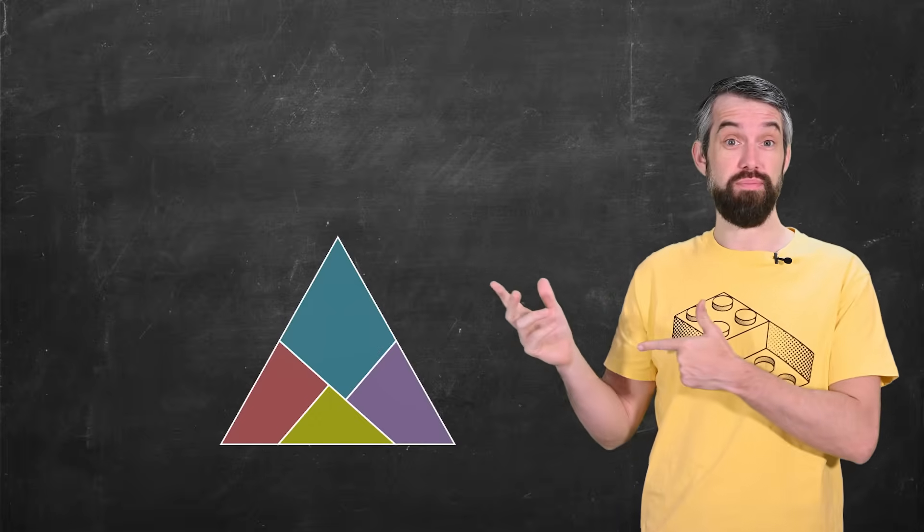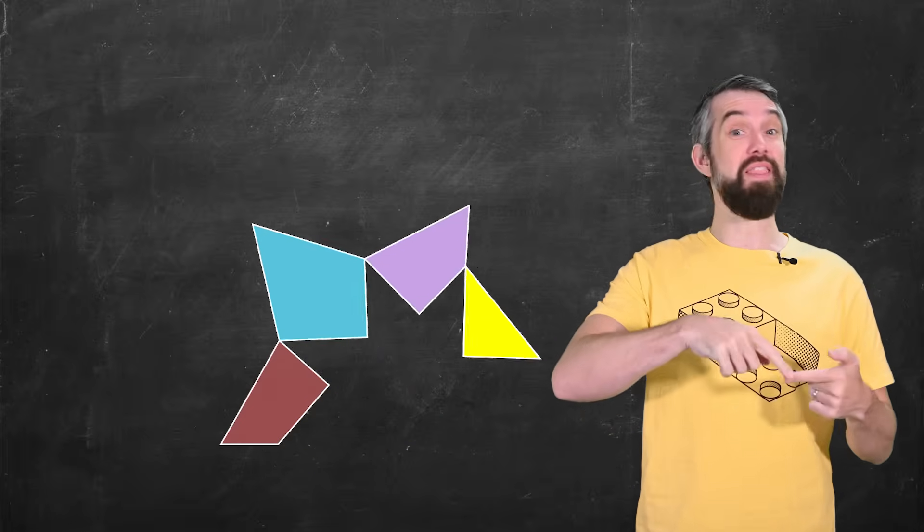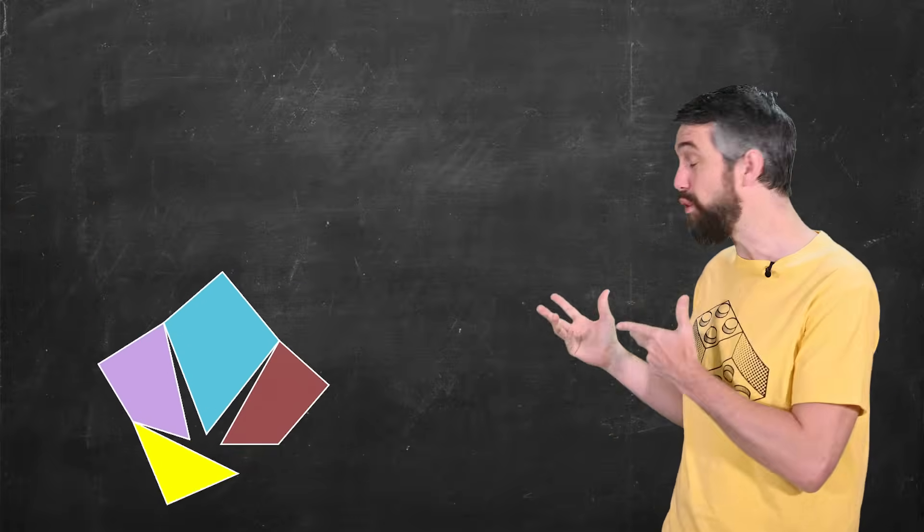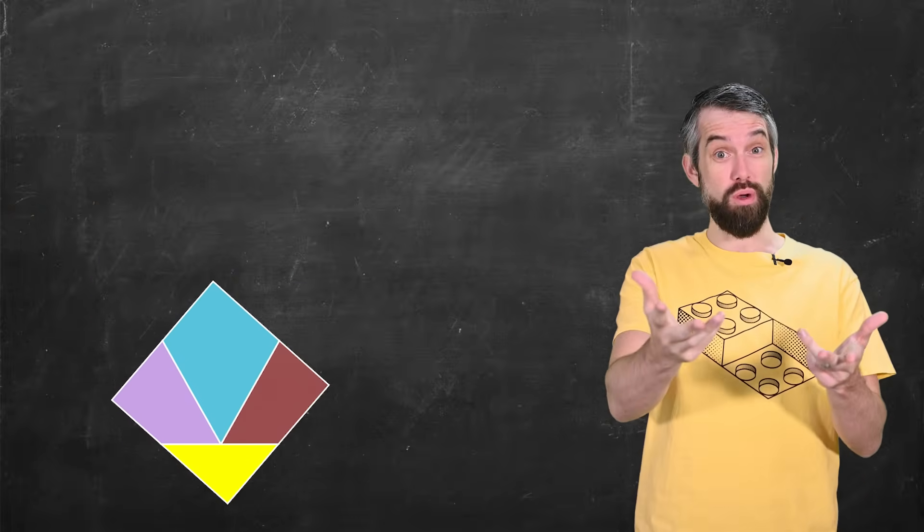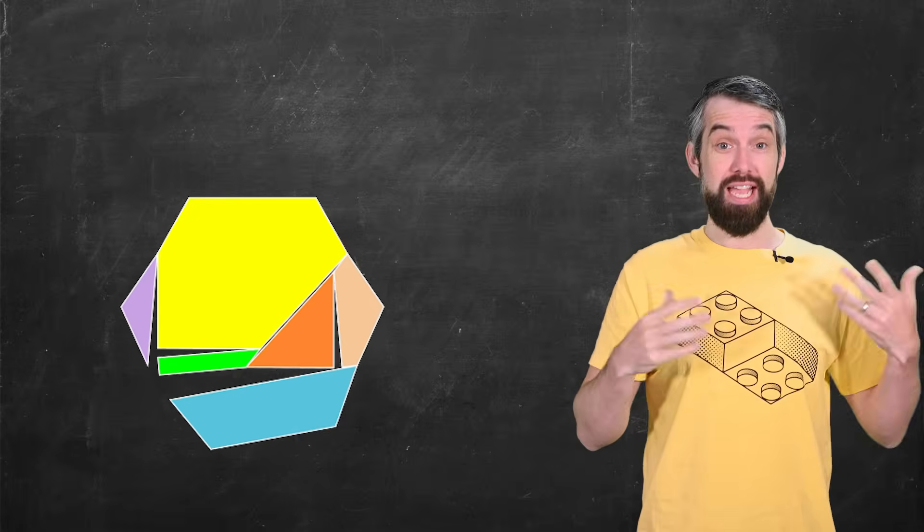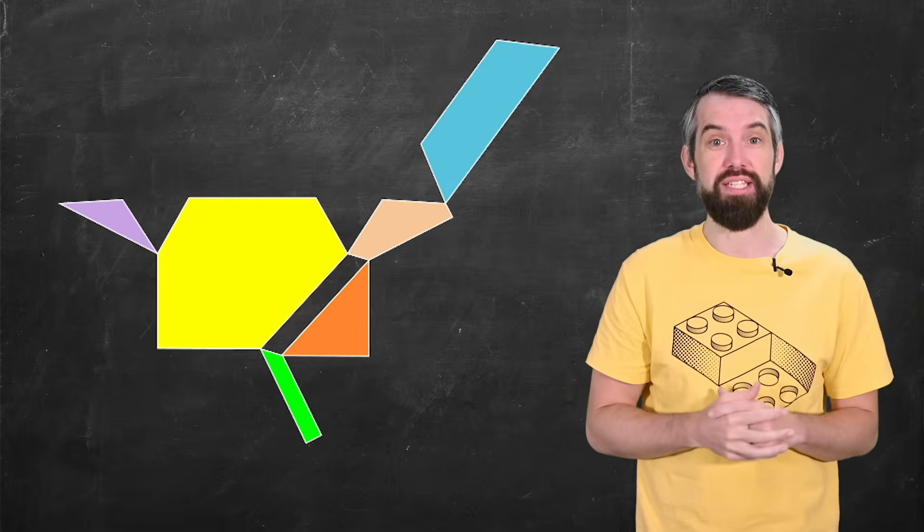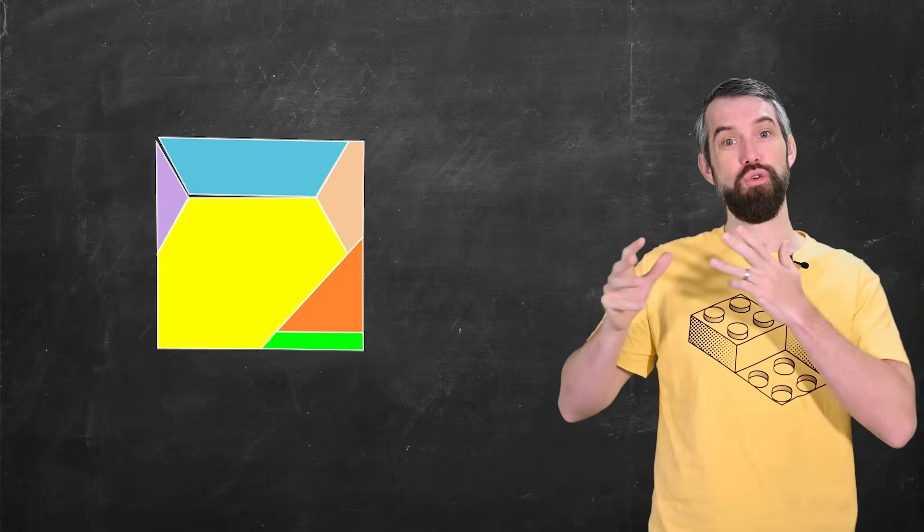I can start with a triangle, dissect it up into four pieces, and then hinge those pieces around to form a square. Cool, right? This is a hinge dissection, and there's all sorts of hinge dissections from one polygon to another polygon.